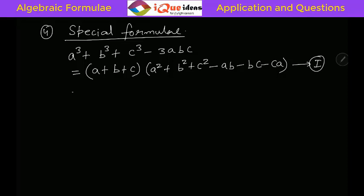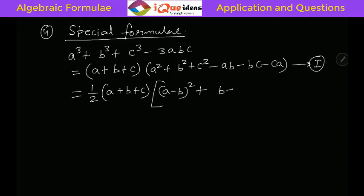There is one more way in which this can be factorized. It is written as half of a plus b plus c, into a minus b whole square plus b minus c whole square plus c minus a whole square. So this is the second factorization.